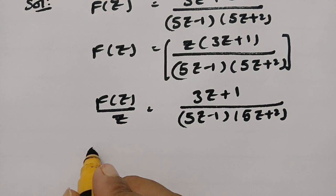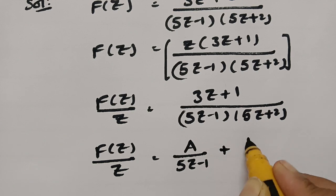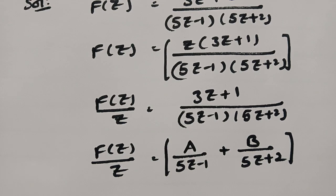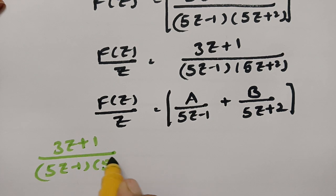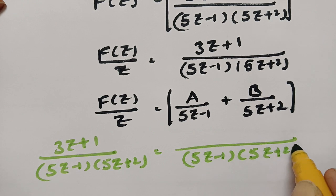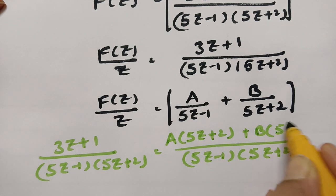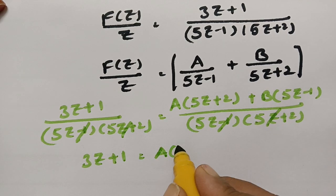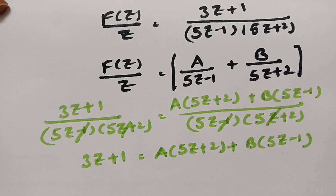Now resolving into partial fractions: F(Z)/Z = A/(5Z - 1) + B/(5Z + 2). Taking LCM and cross-multiplying gives: 3Z + 1 = A(5Z + 2) + B(5Z - 1). We need to find the values of A and B by substitution.